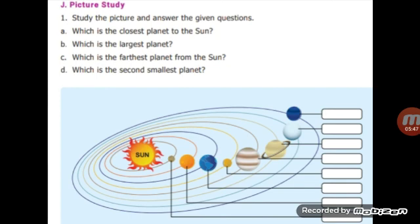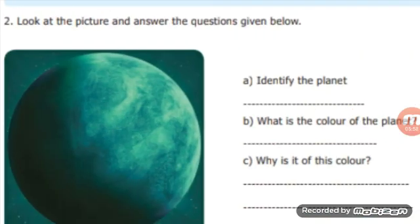Then, name the planets according to the distance from the sun: Mercury, Venus, Earth, Mars, Jupiter, Saturn, Uranus, Neptune. Next, identify the planet. It is Uranus. What is the color of the planet? It appears blue-green in color. Why is it of this color? Uranus appears blue-green in color due to the presence of methane.